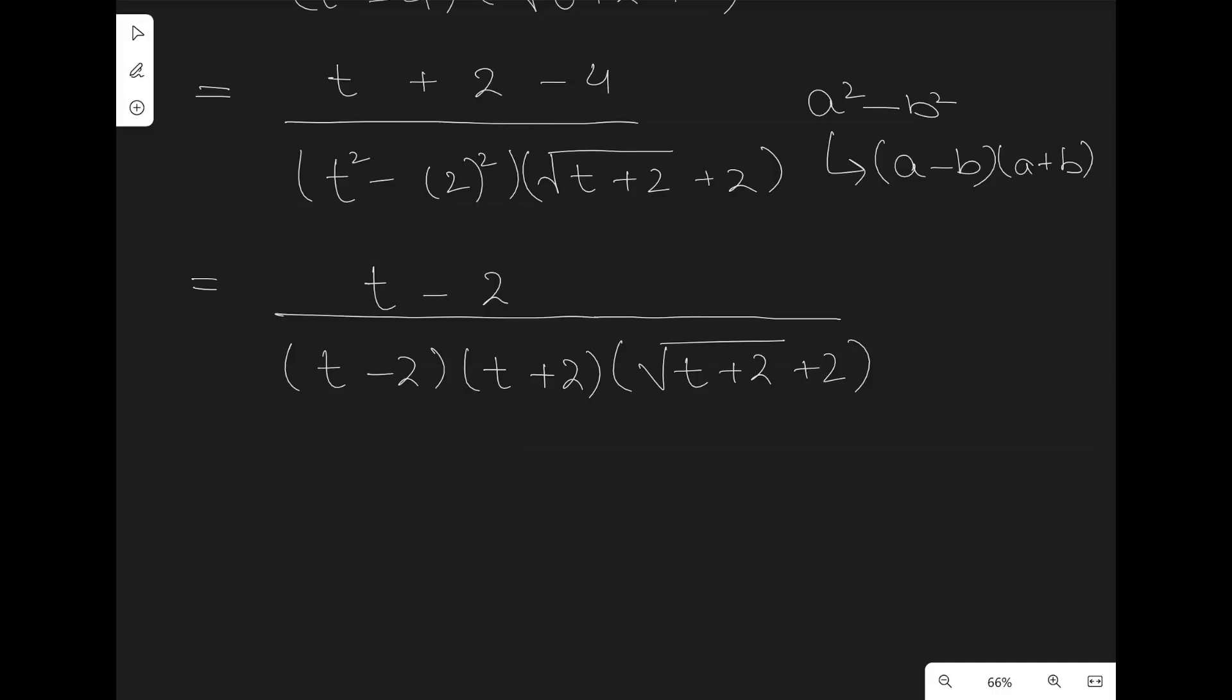So, you've finally rationalized the question. Now, the next step we are going to do is called simplification. So, we have noticed that there is a (t-2) in the numerator and there is a (t-2) in the denominator, so we can just cancel out the terms and we have simplified it further.